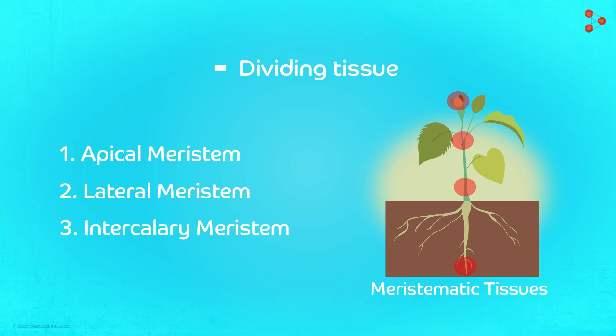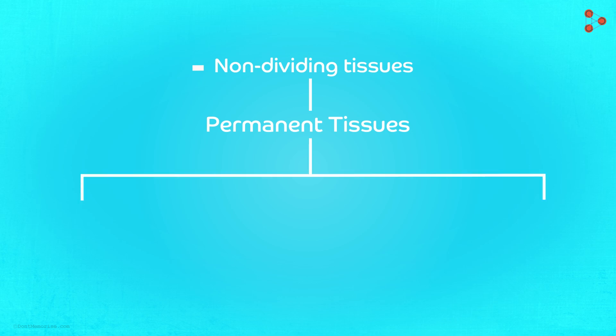The next in the list would be those tissues which have lost their capacity to divide. These are the permanent tissues. These tissues help the plant to perform various activities but don't contribute to its growth. We can classify them further depending upon the cells present in them. First category is where we have all the cells to be of the similar type. These are the simple permanent tissues. According to their functions, they are classified into three types.